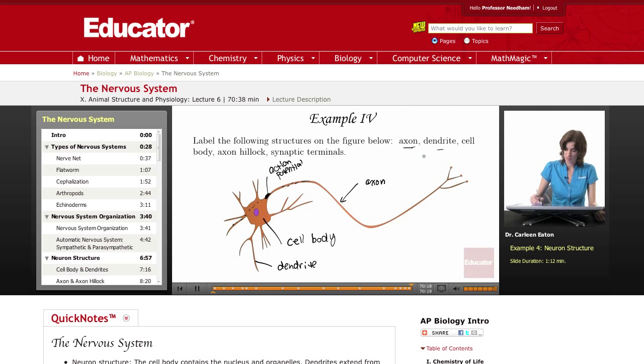So we did axon, we did dendrite, cell body, axon hillock, and finally synaptic terminals here at the end of the axon. And these are the site of the release of neurotransmitters.